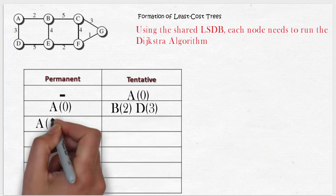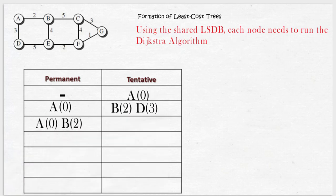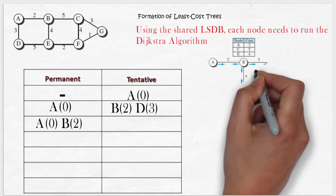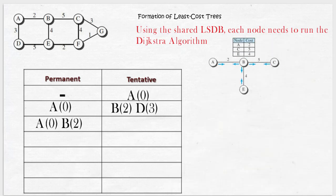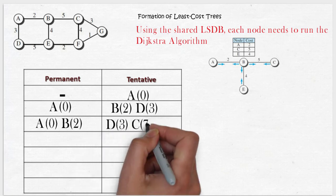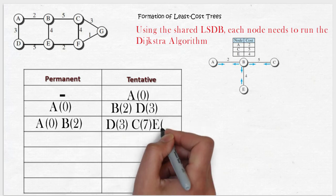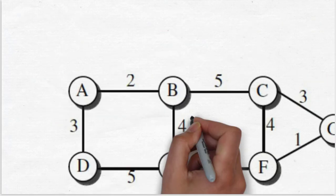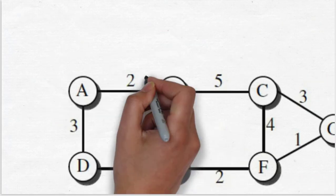Node A has the knowledge about network topology. Because node B is moved to permanent, the next step is to trace the adjacent nodes to node B. Nodes E and C are adjacent to node B. Because tree calculation here is from node A, the total cost from source node A to other nodes E and C through node B are calculated.